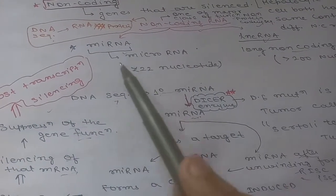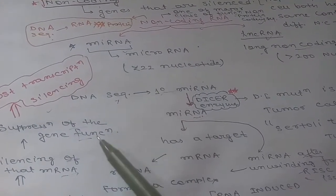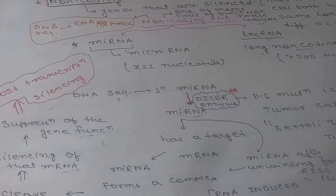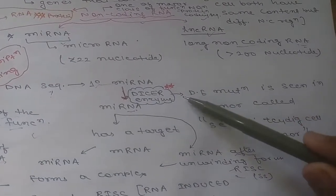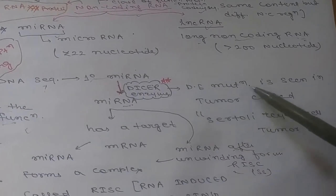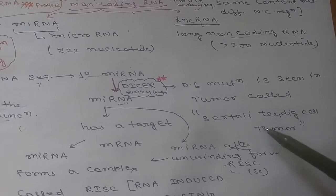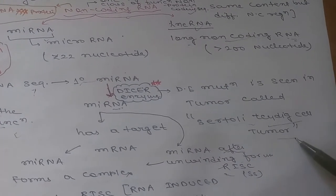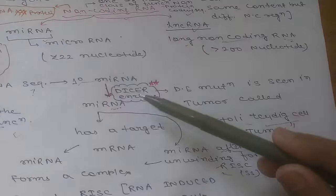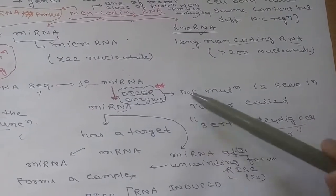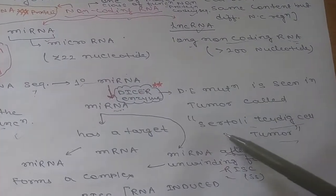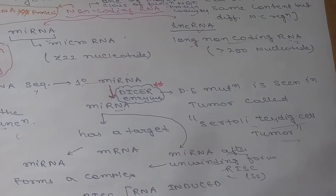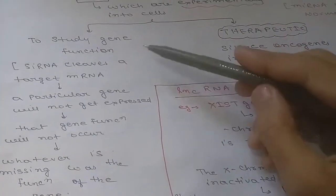Now coming to the Dicer enzyme: Dicer enzyme mutation is seen in a tumor known as Sertoli-Leydig cell tumor. This is an important point to remember.